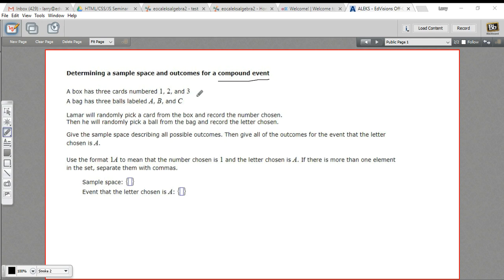So in this one, you have a box, and in that box are three cards, and they are numbered one, two, and three, and you're going to pick one of those out of there. And you have a bag, and it's got three marbles in it, or three balls, and they're labeled A, B, and C. So you're going to pick one from here and pick one from here. So that's a compound event. There are two things you're doing.